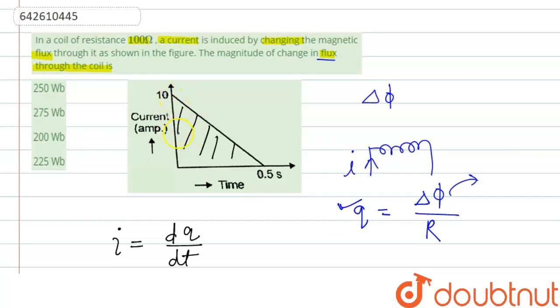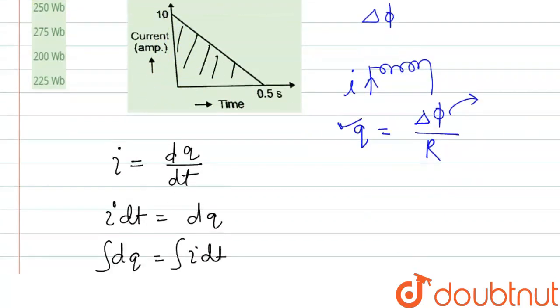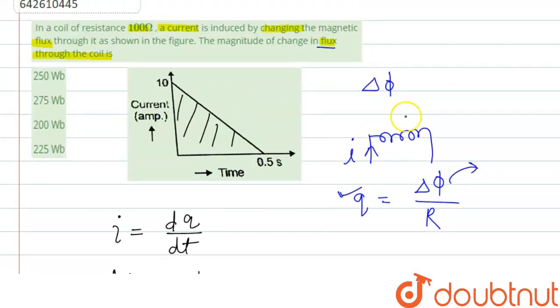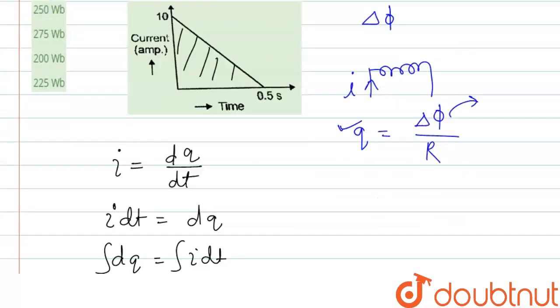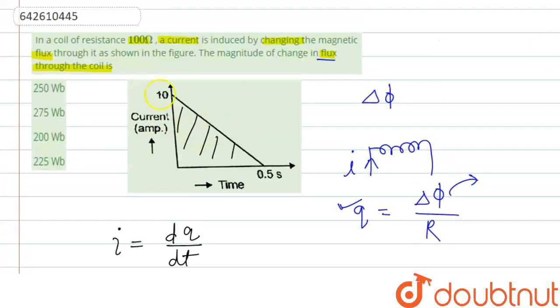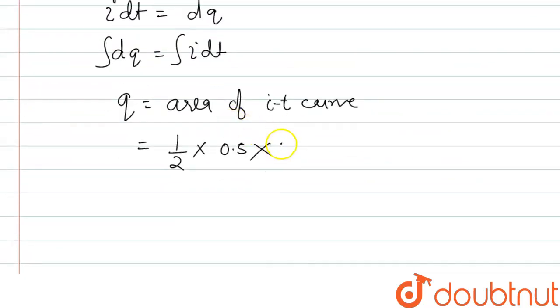So how can we calculate the area? This is a triangle, so we can apply the area of triangle formula. We can write area of triangle as half the base, and the base is given here 0.5, times perpendicular height and that is 10, and the unit will be in coulomb. So this will be 2.5 coulomb.